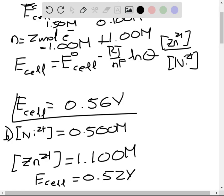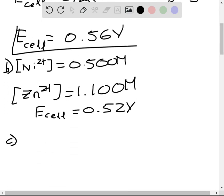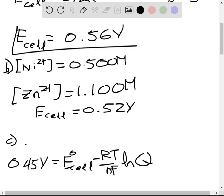And next, we're asked what happens when the concentration decreases to 0.45 volts. So 0.45 volts would be equivalent to the E naught cell minus RT over nF, natural log of our reaction quotient.